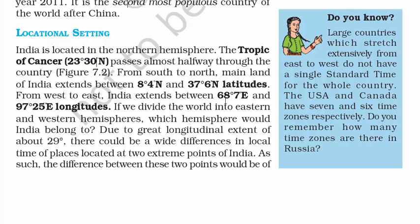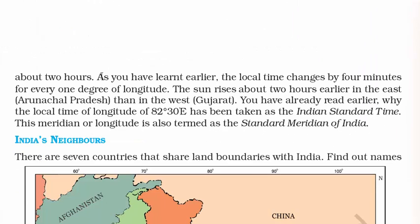India extends between 68.7 degrees east and 97.25 degrees east longitude. If we divide the world into eastern and western hemispheres, India belongs to the eastern hemisphere. Due to the great longitudinal extent of about 29 degrees, there could be a wide difference in local time between the two extreme points — about two hours difference. Unlike some countries, India follows one time zone, whereas countries like Russia follow nine time zones.